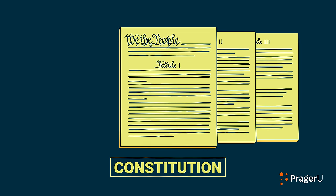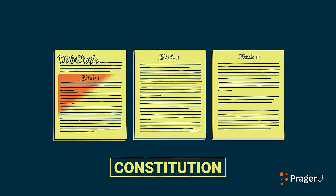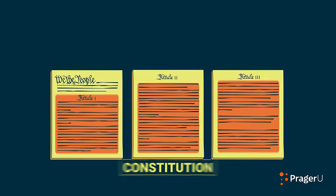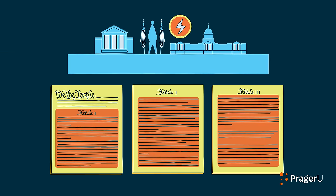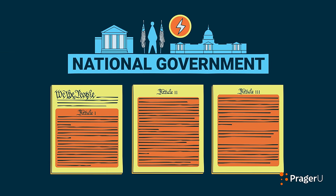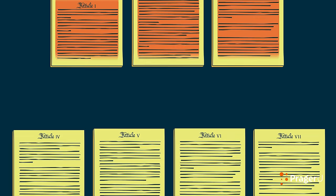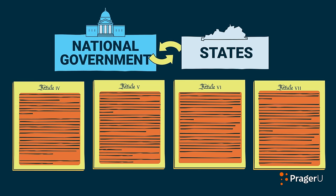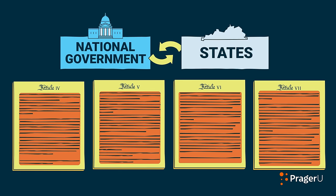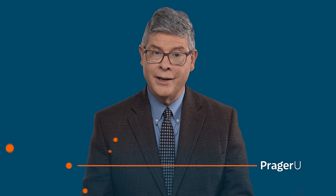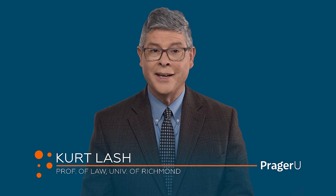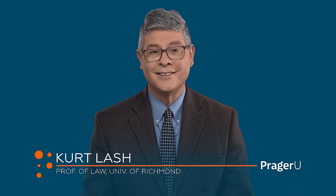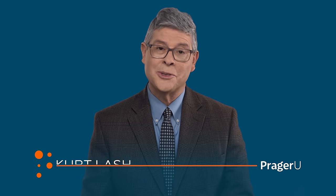The first half of the Constitution, Articles 1, 2, and 3, discuss the powers of the three branches of the national government. The second half of the Constitution, Articles 4 through 7, discuss the relationship between the national government and the states. These four articles don't get the attention of the first three, but that doesn't mean they're any less important. Let's take a closer look.